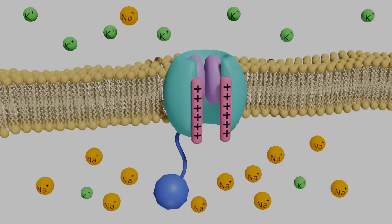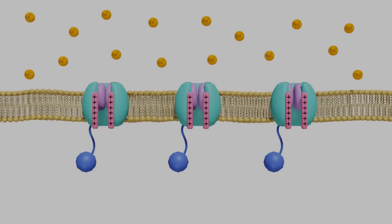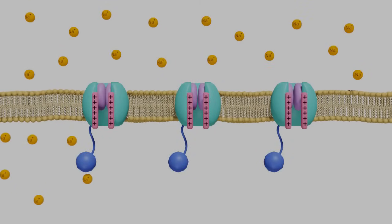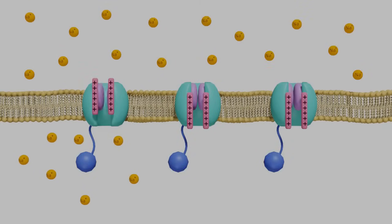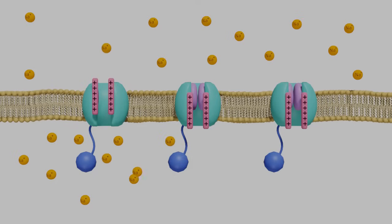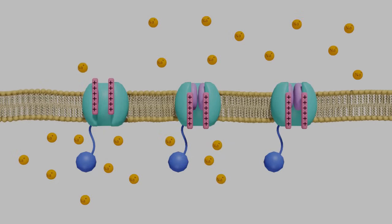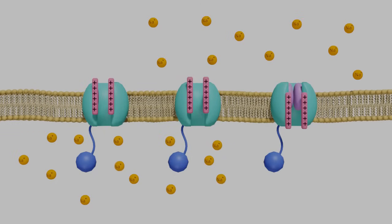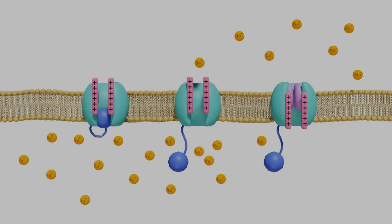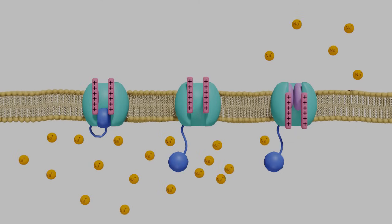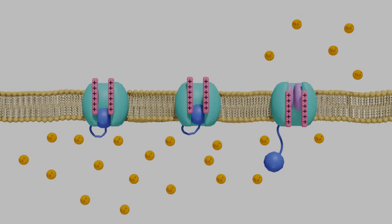You can see how the inactivation gate forces the action potential to proceed in only one direction. All along the axon, there are voltage-gated sodium channels. The channels to the left can influence the channels to the right by changing the potential and moving the voltage sensors. However, the channels to the right cannot influence the channels to the left, because the inactivation gate is engaged.